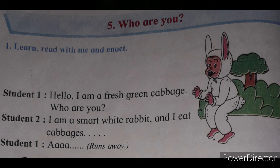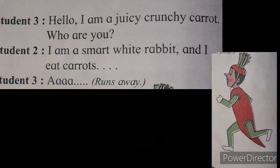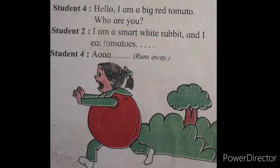Student Three says: 'Hello, I'm a juicy crunchy carrot — who are you?' Student Two says: 'I am a smart white rabbit and I eat carrots.' Then Student Three gets scared, starts crying, and runs away.